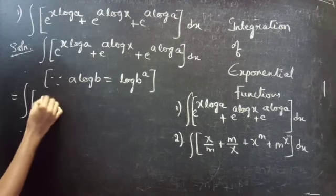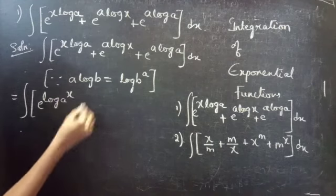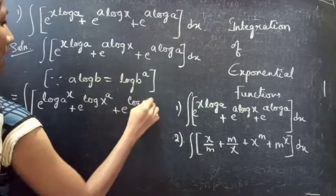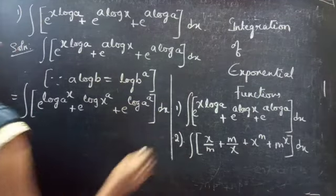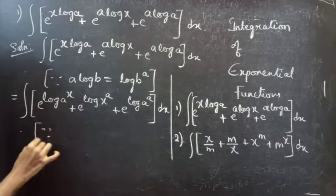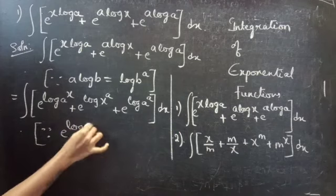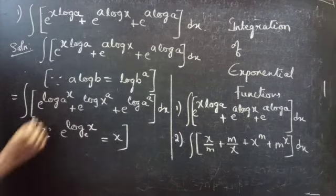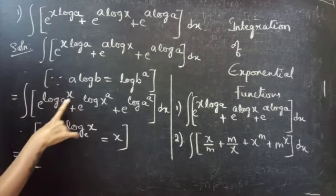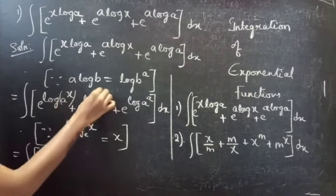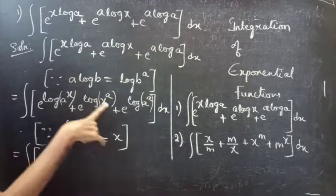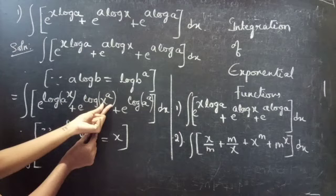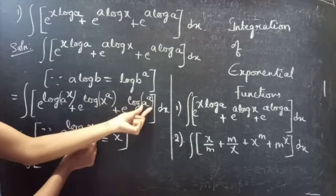This becomes integral of e^(log a^x) plus e^(log x^a) plus e^(log a^a) dx. We know that e^(log x) to the base e equals x. So comparing with this formula, we consider x equals a^x, x equals x^a, and x equals a^a.